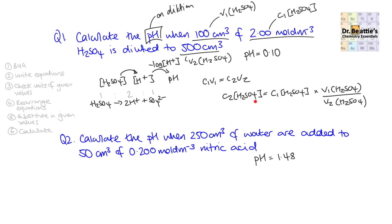Because when we work out the concentration of sulfuric acid on dilution, it will not equal the hydrogen ion concentration — it's a 1 to 2 ratio. So whatever the value of C2 H₂SO₄ is, we need to multiply by 2 to get the H⁺ concentration on dilution. Then we use pH = minus log[H⁺], where H⁺ is that value multiplied by 2.